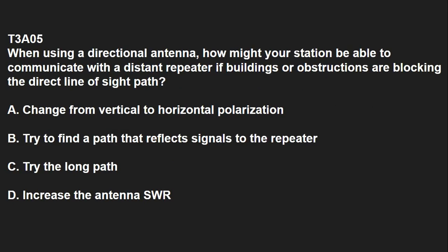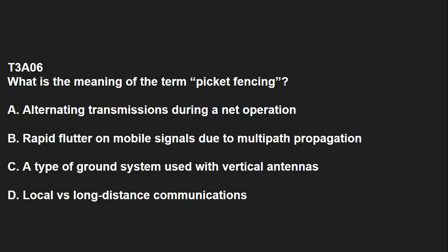T3A05: When using a directional antenna, how might your station be able to communicate with a distant repeater if buildings or obstructions are blocking the direct line-of-sight path? Try to find a path that reflects signals to the repeater. T3A06: What is the meaning of the term picket fencing? That is a rapid flutter on mobile signals due to multipath propagation.